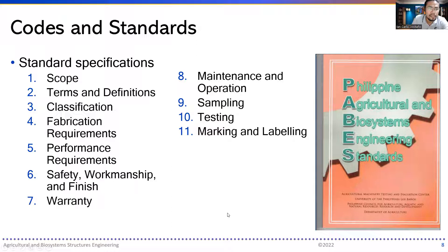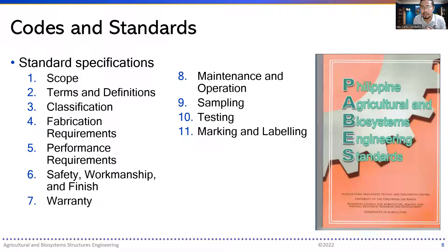We now proceed to standards. Standards are different from codes in that standards are recommendatory — though there are portions with mandatory requirements, particularly in sentences that contain the word 'shall.' Generally, standards are more recommendatory in nature. If something is below standard, it is substandard, which could mean that a structure is not in good working and operating condition, and it might fail and should be remade to comply with the standards.